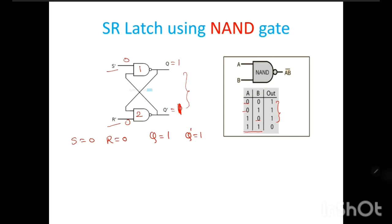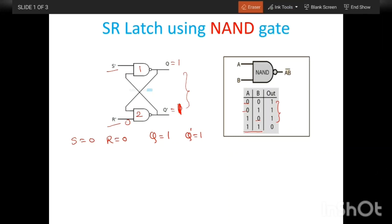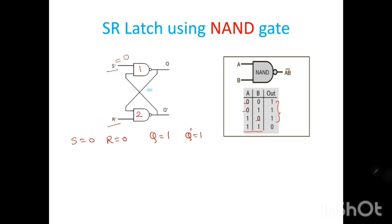Consider the second case: S = 0 and R = 1. One of the inputs to the first NAND gate is 0, so the output of the first NAND gate is 1. This 1 is applied to the second gate; with both inputs being 1, the output is 0. Therefore, Q becomes 1 and Q̄ becomes 0 — this is the set state.